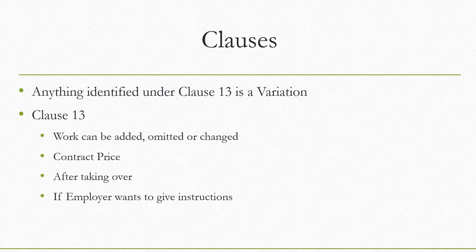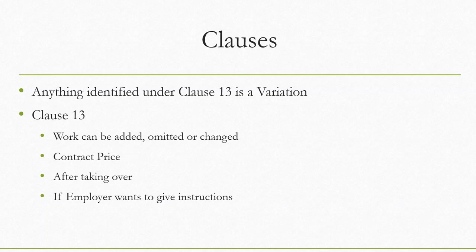In FIDIC, clause number 13 is the clause that covers variation. Under that clause, if anything is newly added to your construction or to your existing design, that will be a variation. If something has been removed from the existing original design, that omission can also be identified as a variation. Or if you want to change something — like changing a material, for example floor finishes from tile to granite — that is also a change.